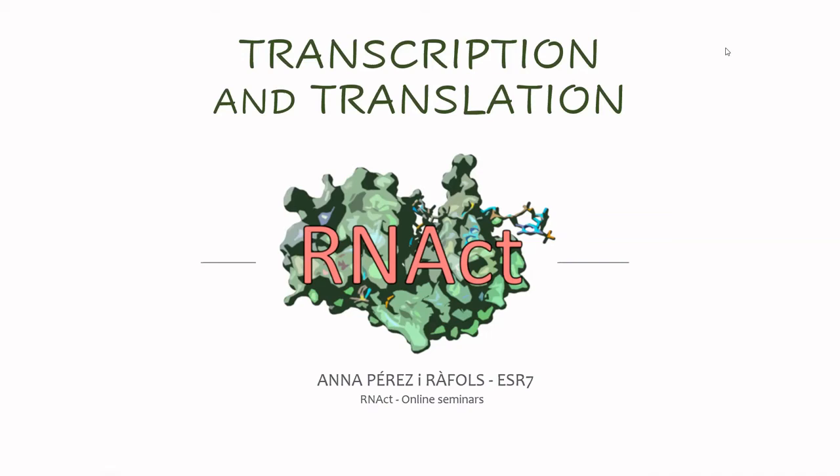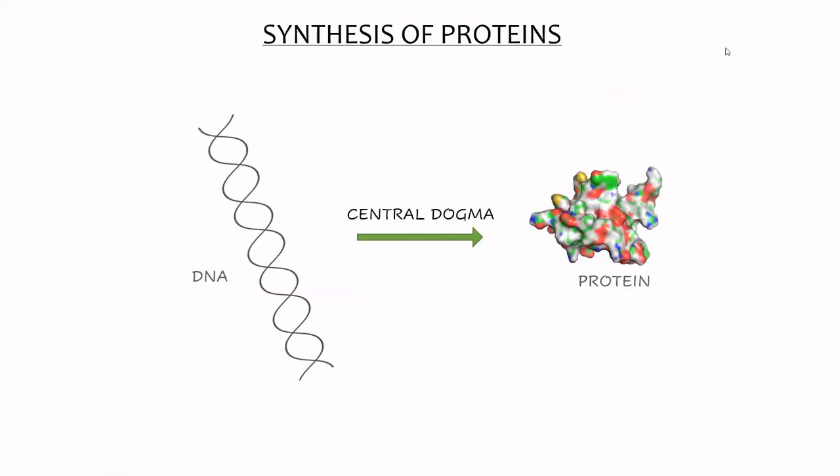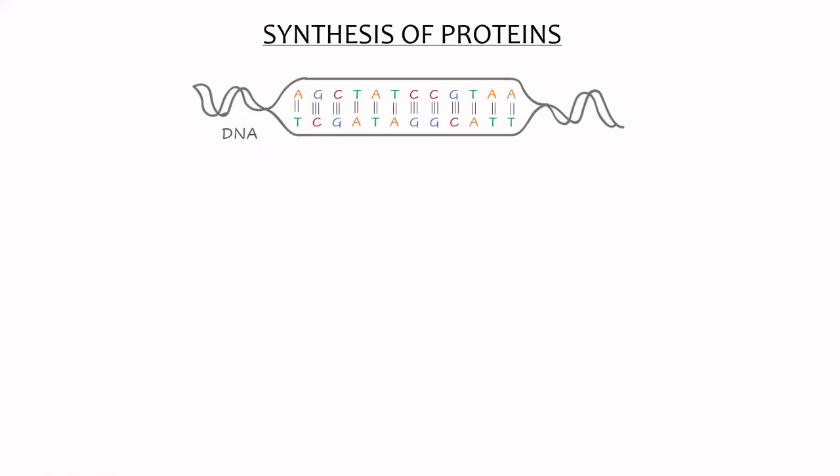Hi and welcome to the second ARENACT online seminar. Today we will talk about what in molecular biology is known as the central dogma, which is an explanation of the flow of genetic information within a biological system. It is a transfer of information from the DNA to a protein, and this central dogma is composed of two blocks.